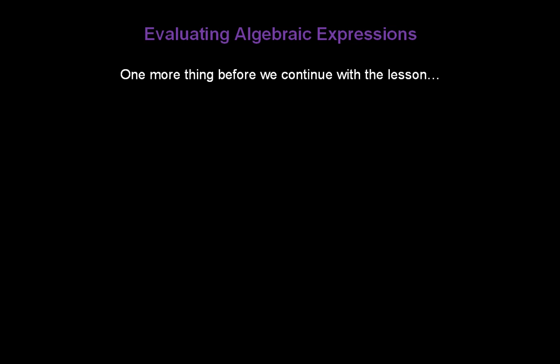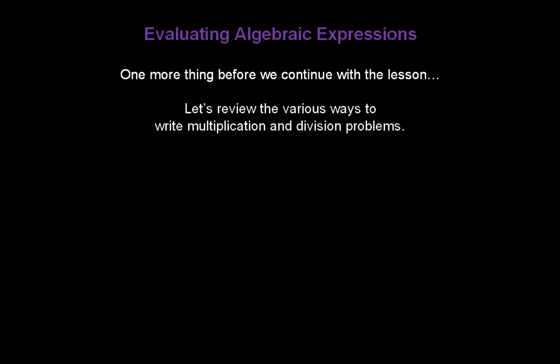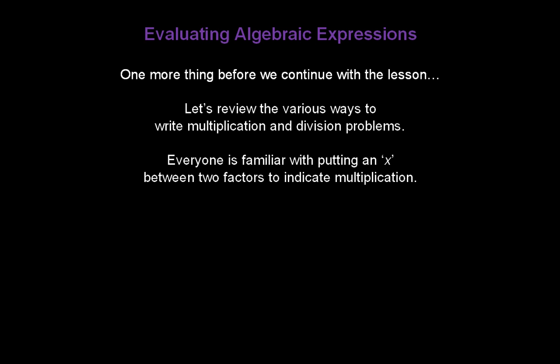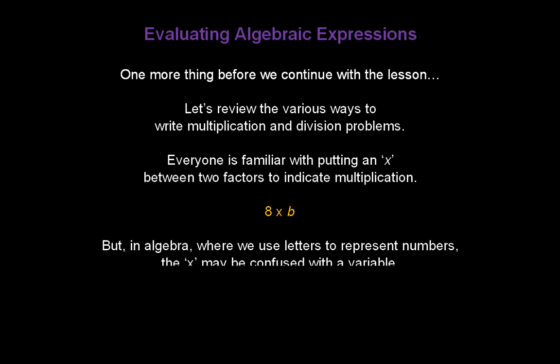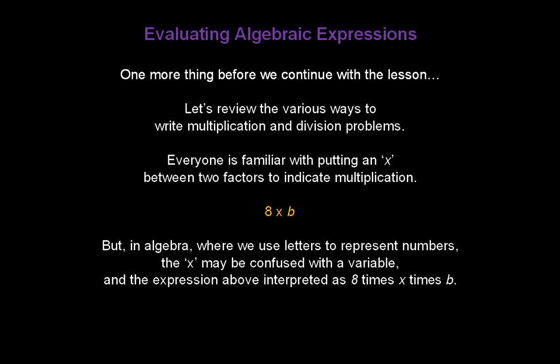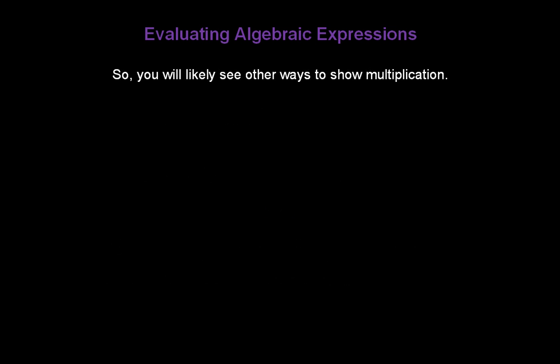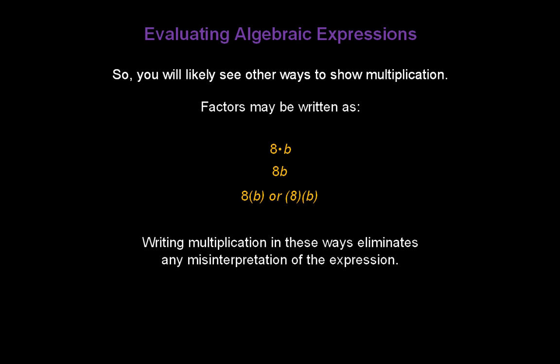Now one more thing I want to talk about before we continue: I want to review the various ways you can write multiplication and division problems in algebra. Everyone's familiar with putting an x between two factors to indicate multiplication, but in algebra where we use letters to represent numbers, the x may be confused with a variable. So you're likely going to see other ways: a dot between factors (8·b), nothing between factors (8b), or parentheses around one or both factors. All of these represent multiplication, and writing it these ways eliminates any misinterpretation.